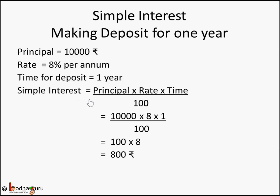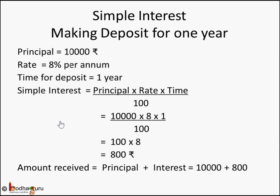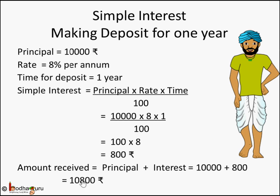So the total amount received by Sukram is 10,000 rupees which he deposited plus the extra 800 rupees, making it 10,800 rupees. His money increased from 10,000 to 10,800 — he is happy!